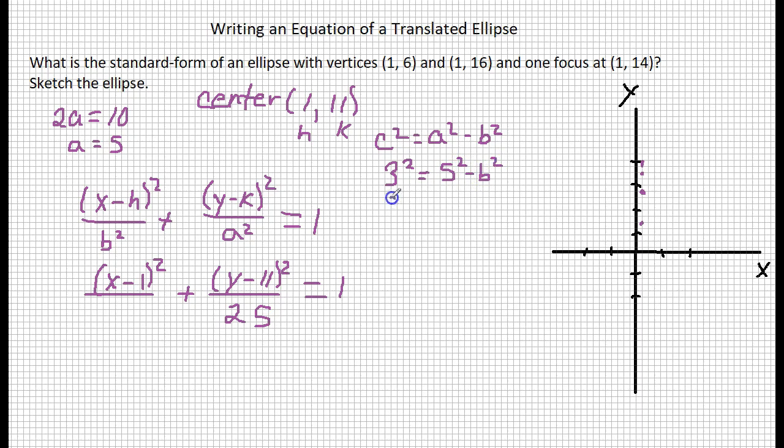3 squared is 9, so 9 equals 25 minus b squared. I'm going to add b squared to both sides, so 9 plus b squared equals 25, subtract 9, b squared equals 25 minus 9.